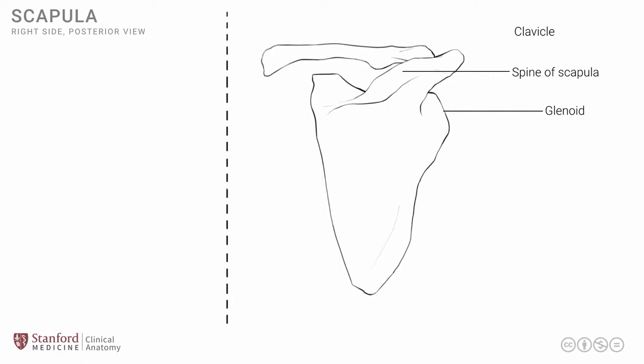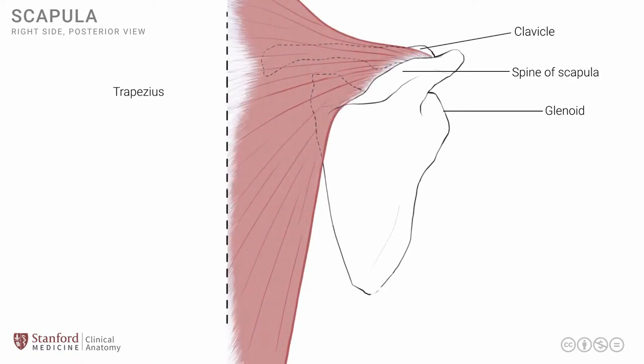The first muscle in this area is the trapezius. It is a large, flat muscle with a right side and a left side. Each muscle is triangular in shape, and the two together become trapezoidal, giving the name trapezius. The trapezius has a very extensive midline attachment all the way from the base of the skull to the twelfth thoracic vertebra. The fibers go laterally and attach onto the spine of the scapula, the acromion, and the lateral end of the clavicle, as shown in the diagram.